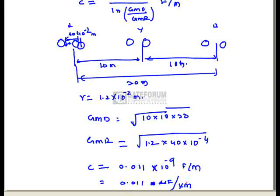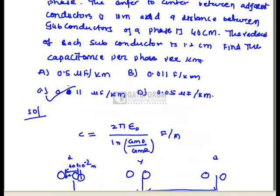The final answer is option C — 0.011 microfarads per kilometer.